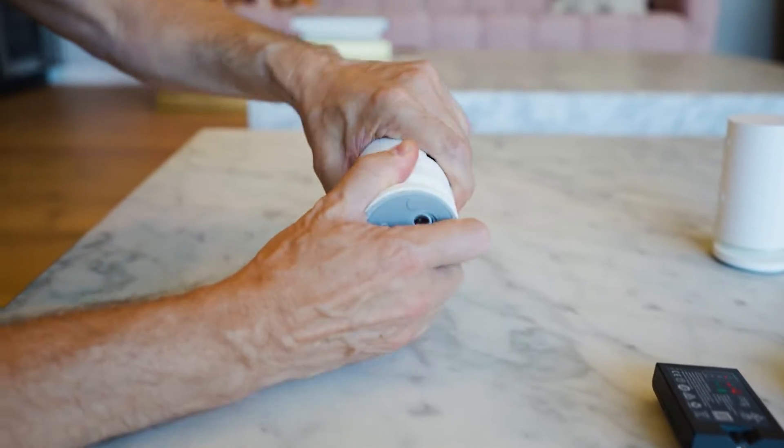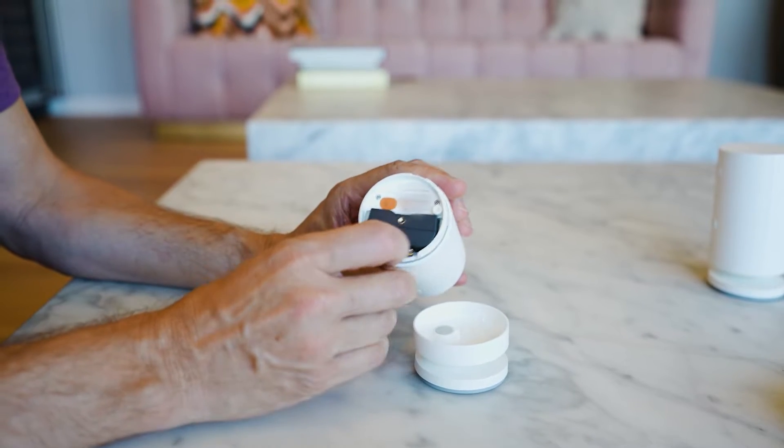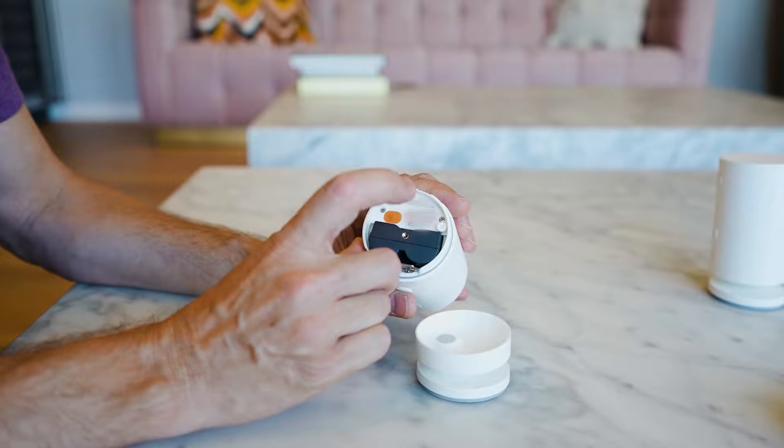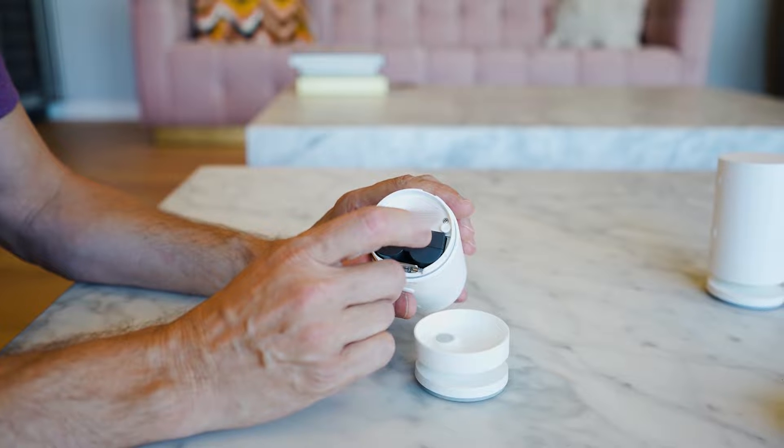What you do is you screw off the bottom, you put the battery in like so. And then with your phone, you're gonna scan this QR code and it's gonna go through the Ring setup in your app. And it's pretty simple to do.